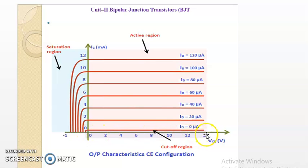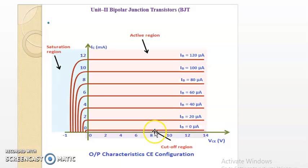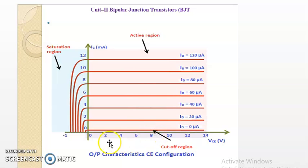In the cutoff region, as VCE is increased, there is no increase in collector current — the collector current is very less, about zero. Whenever the input current is zero, the transistor is in the cutoff region. Both junctions, that is the collector diode and emitter diode, are in reverse bias, and that's why there is no conduction of the transistor.